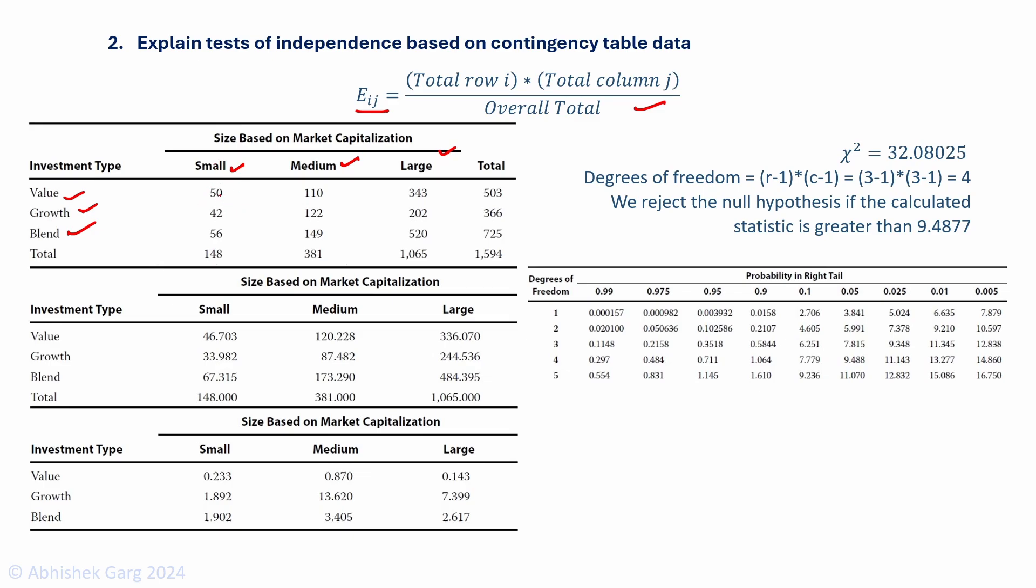In each cell, you are given that there are 50 small value funds, 110 medium value funds, and 343 large value funds. We calculate the total of each row and the total for each column. This is your overall total. This table here gives the expected values calculated from this formula. These are the expected values for each cell. And this is your chi-squared test stat.